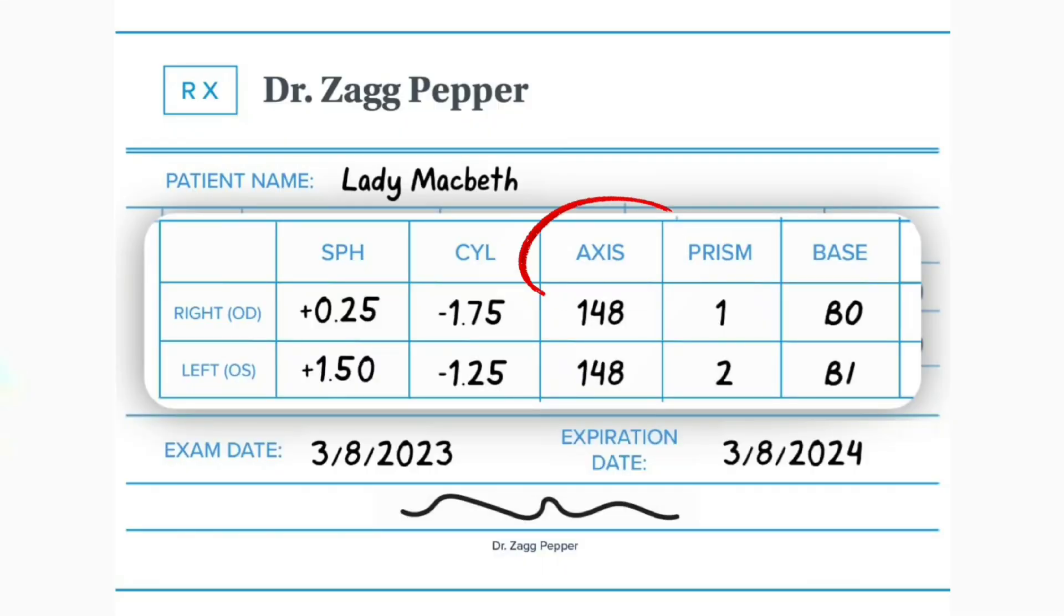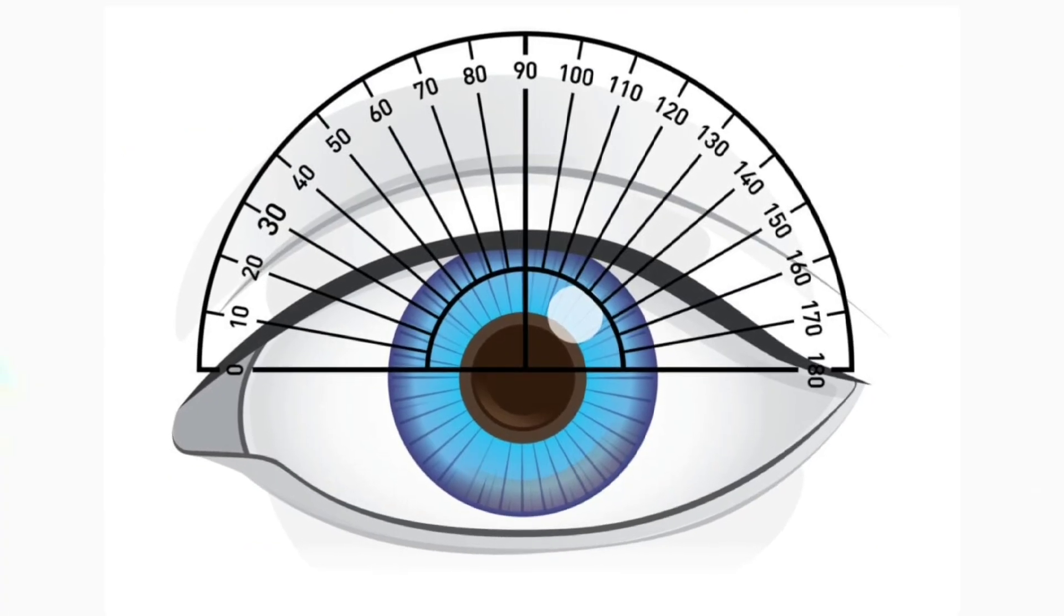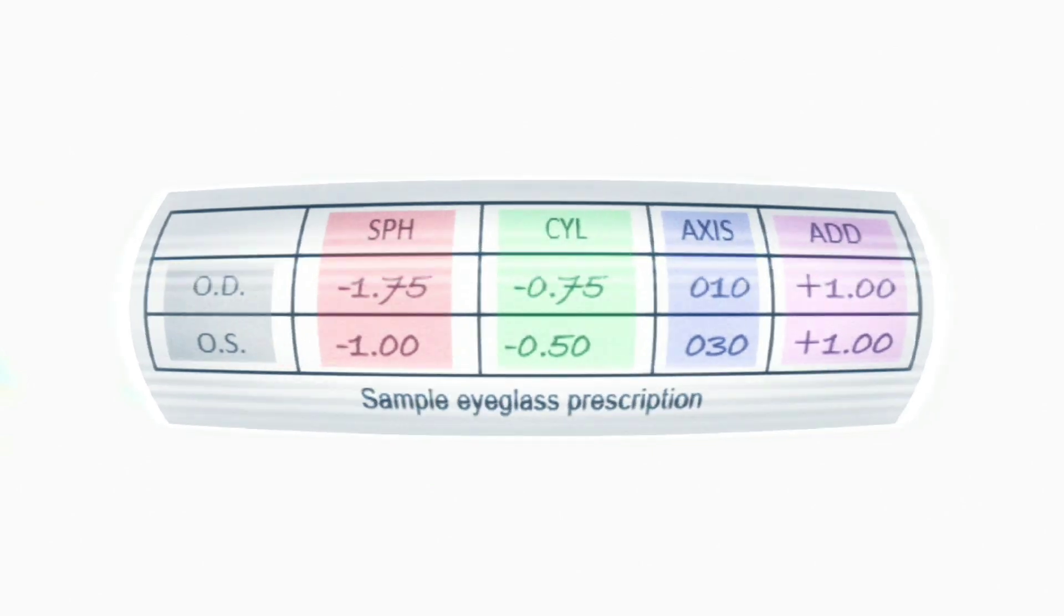So the next value is axis. This is telling you the orientation of your astigmatism. CYL tells you its strength, and axis tells you its direction. So here's some examples.